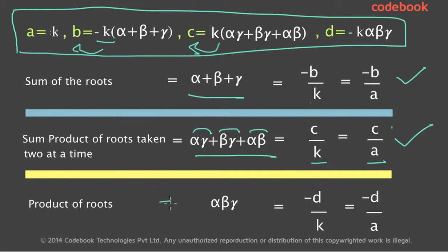The third relationship is the product of all roots: αβγ. From d = -kαβγ, taking -k to the other side gives αβγ = -d/k = -d/a. So the product of the roots of a cubic polynomial equals -d/a, where d is the constant term and a is the coefficient of the x³ term. These are the three relationships between the roots of a cubic polynomial and its coefficients.